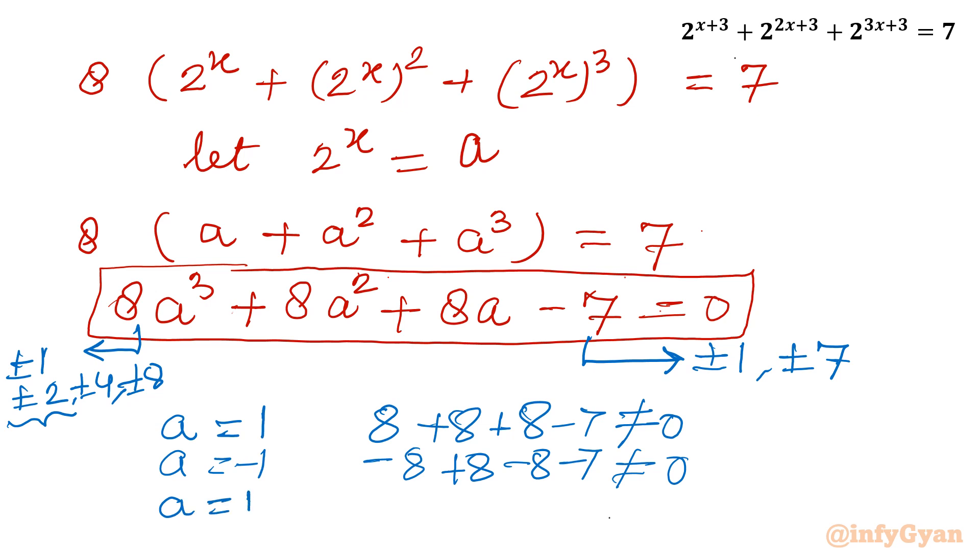So similar way I can consider leading coefficient ±2. So I will put a = 1/2. So I will be writing here 8·(1/2)^3 so 1/8, plus 8·(1/2)^2 so 1/4, plus 8·(1/2) - 7. Is this true? So first value is 1 + 2 + 4, yes, 1 + 2 + 4 is 7, and after that it is -7, so yes it is equal to 0. So a = 1/2 is our base solution.